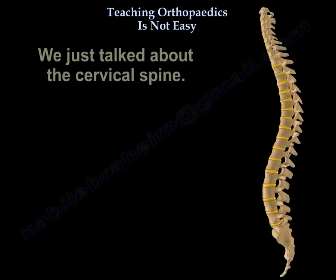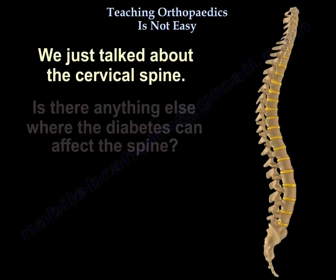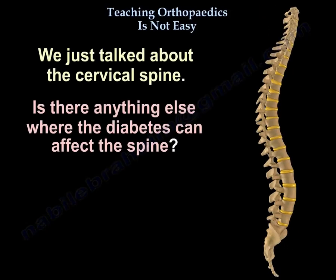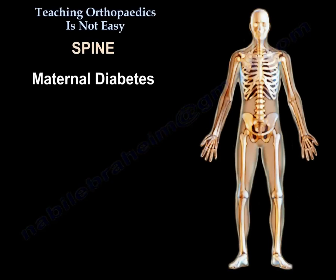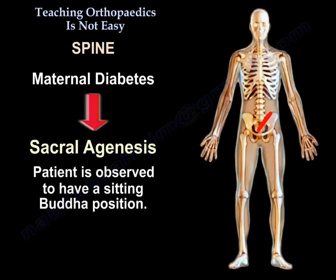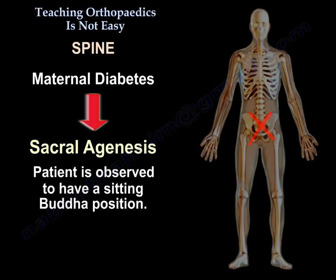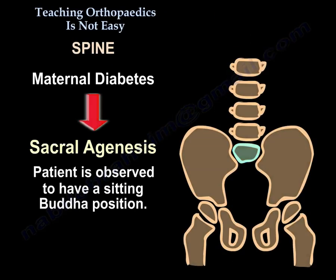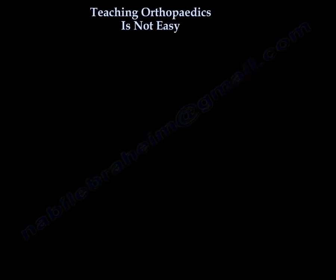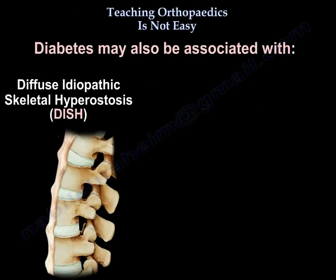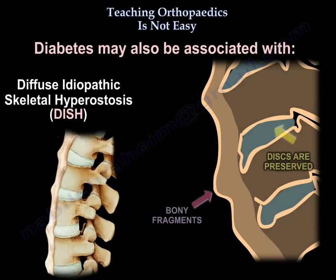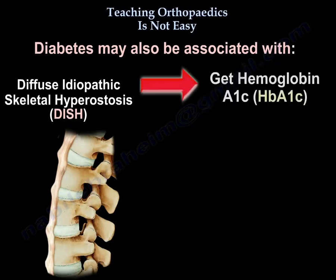We just talked about the C-spine. Is there anything else where diabetes can affect the spine? Yes. Maternal diabetes may give us sacral agenesis. The patient is observed to have a sitting Buddha position. Diabetes may also be associated with DISH. Get hemoglobin A1C.